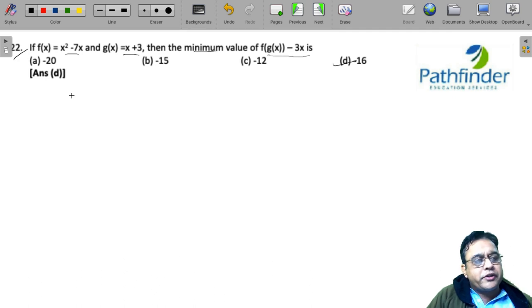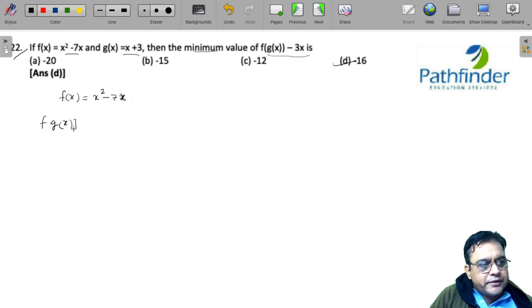Straightforward question really. So you have f(x) = x² - 7x. And now you have to find f(g(x)). It means instead of x, you will place x + 3. So you have an x here. So instead of x, I will write (x + 3)² - 7(x + 3).